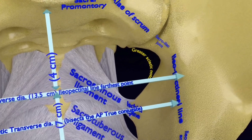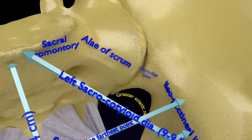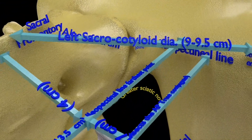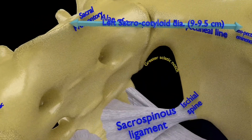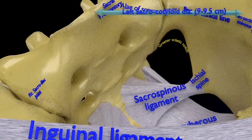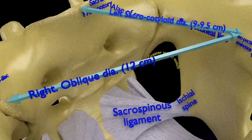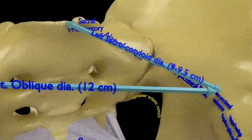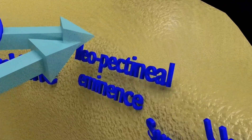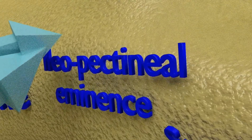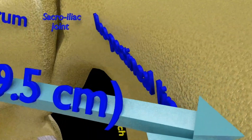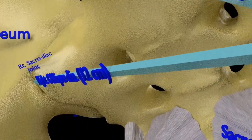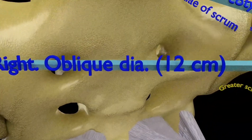The oblique diameters of importance at the pelvic inlet are: the sacrocotyloid diameter, which is 9 to 9.5 cm, extending from the promontory of the sacrum to the right and left iliopectineal eminences. The right oblique diameter is 12 cm and is the diameter on which the fetal head presents; it extends from the right sacroiliac joint to the left iliopectineal eminence. The left oblique diameter is also 12 cm, extending from the left sacroiliac joint to the right iliopectineal eminence.